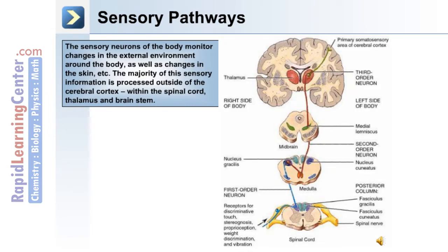Let's begin with the sensory pathways. This image depicts the sensory pathway beginning in the brain, in the somatosensory area of the cerebral cortex, moving down to the spinal cord. The sensory neurons of the body monitor changes in the external environment as well as changes in the skin. The majority of sensory information is processed outside the cerebral cortex, within the spinal cord, thalamus, and brainstem.